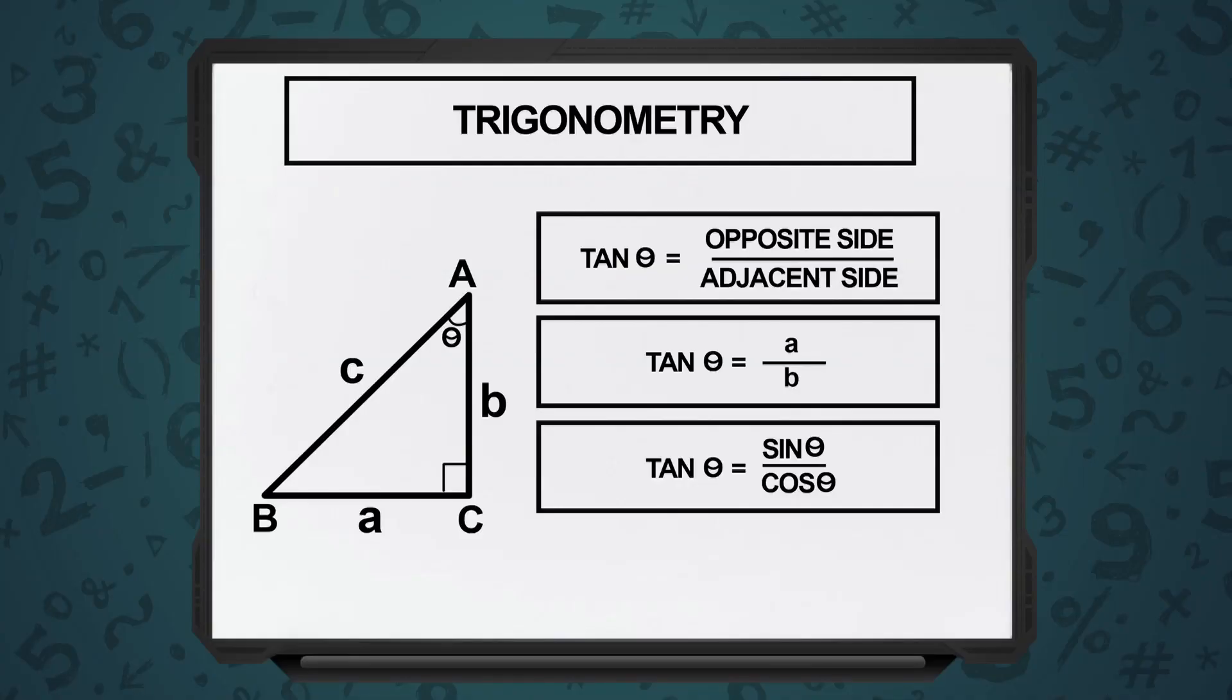So if I do sin theta divided by cos theta, what is the result? A by B. And what does A by B stand for? Tan theta.